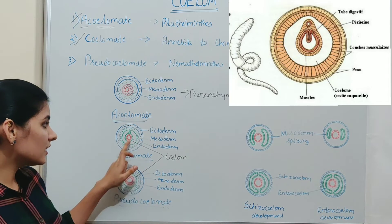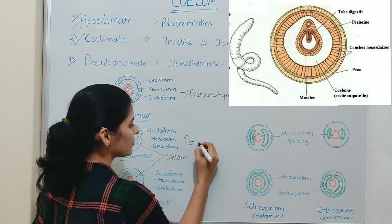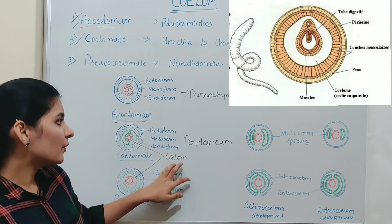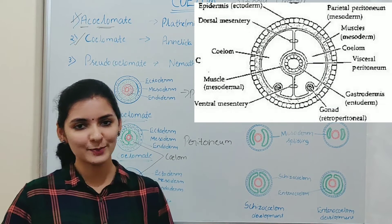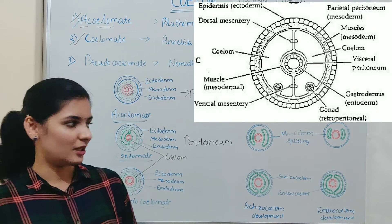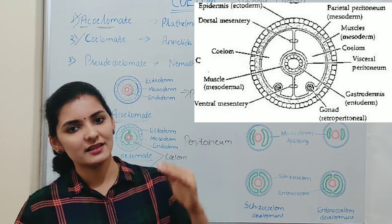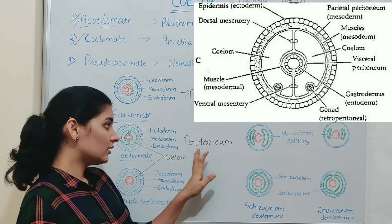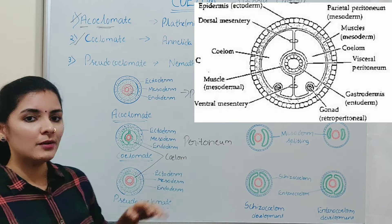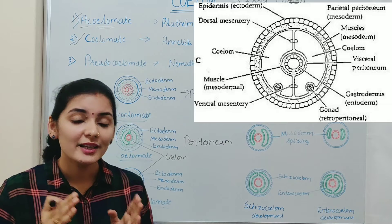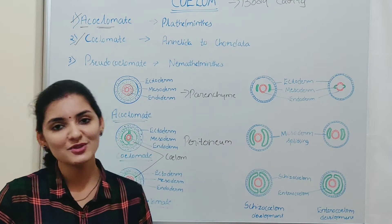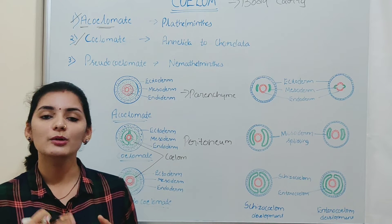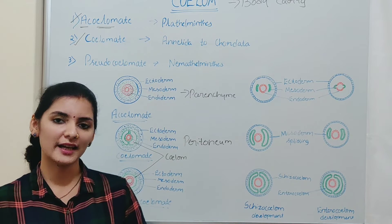The mesoderm layer surrounding the coelom gives rise to peritoneum in the adult. Peritoneum is an epithelial layer present around the body cavity, derived from embryonic mesoderm. There are two types: parietal peritoneum, present just below the body wall, and visceral peritoneum, present around the digestive tube. This mesodermal lining of the coelom allows attachment of organs to each other, their arrangement in a particular order, and movement of organs to a certain extent.